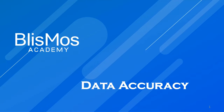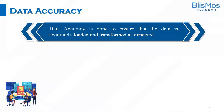Welcome back. As part of this video, we'll understand how to validate data accuracy. Data accuracy is the correctness of the data — whether the data is accurate or correct in the context of the data being analyzed. We have to ensure data accuracy is taken care of as part of the ETL process, to ensure that data is accurately loaded and transformed as expected.